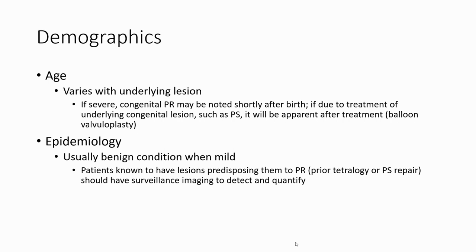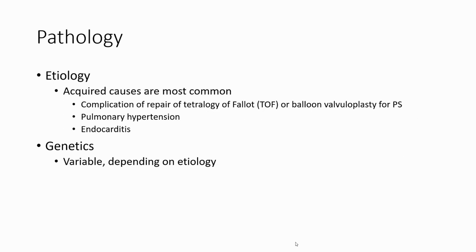Conditions predisposing patients to pulmonary regurgitation, such as tetralogy of Fallot or pulmonary stenosis repair, should have serial imaging to detect and quantify the regurgitation. Common complications of repair include pulmonary hypertension, endocarditis, and genetic variables that can affect the trilogy of findings.